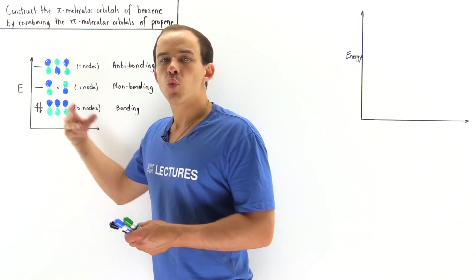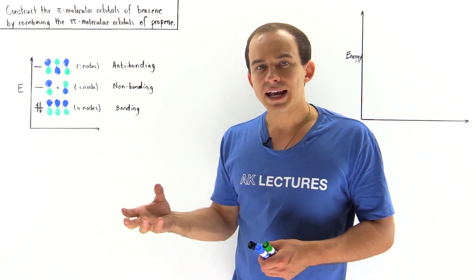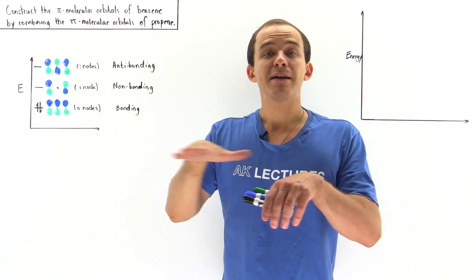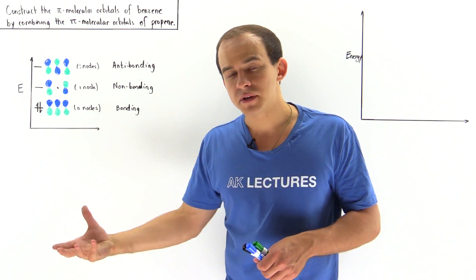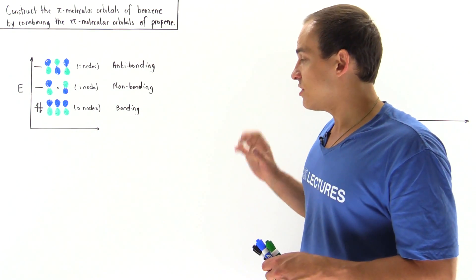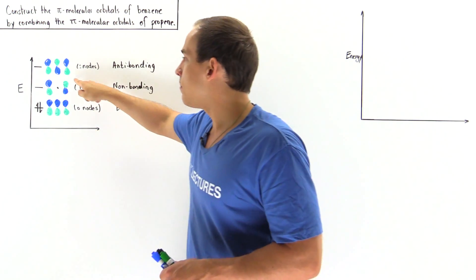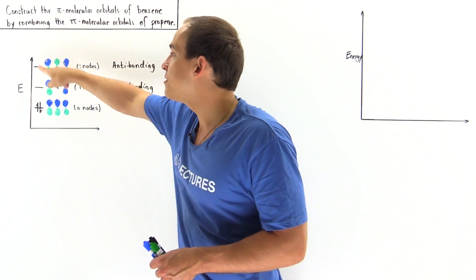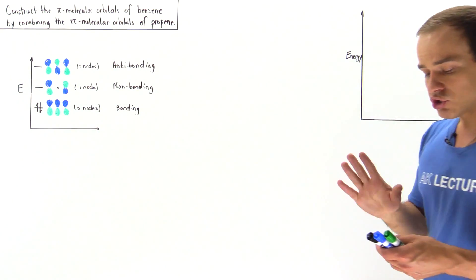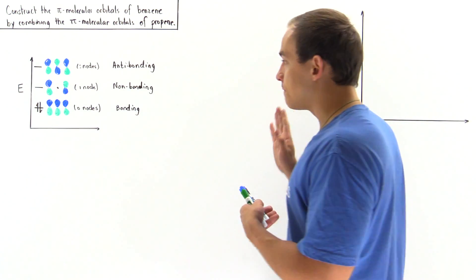We want to combine each pi molecular orbital with itself. Remember, only combining pi molecular orbitals that are the same in energy will produce molecular orbitals that actually matter. So we combine the bonding with itself, the non-bonding with itself, and the anti-bonding with itself, to produce the six pi molecular orbitals of benzene. Let's take a look at the first combination.